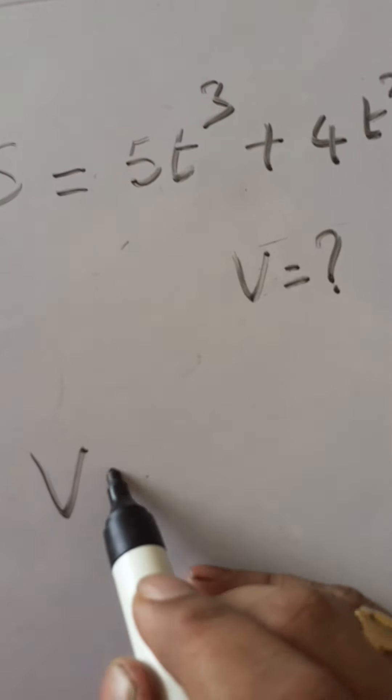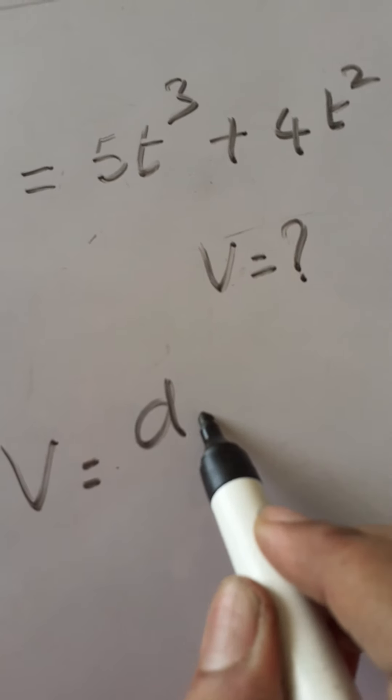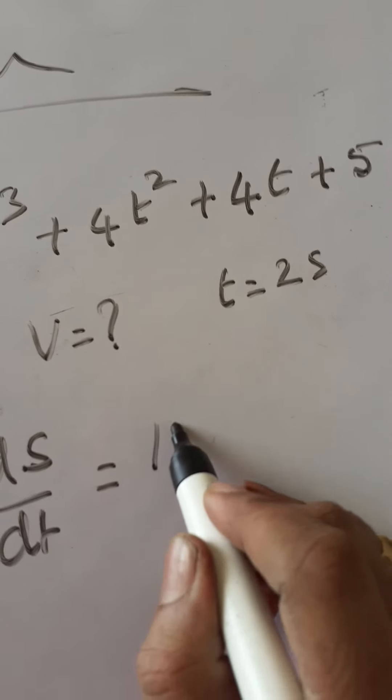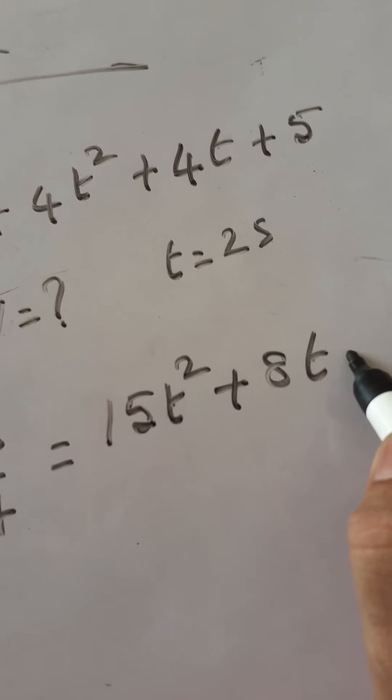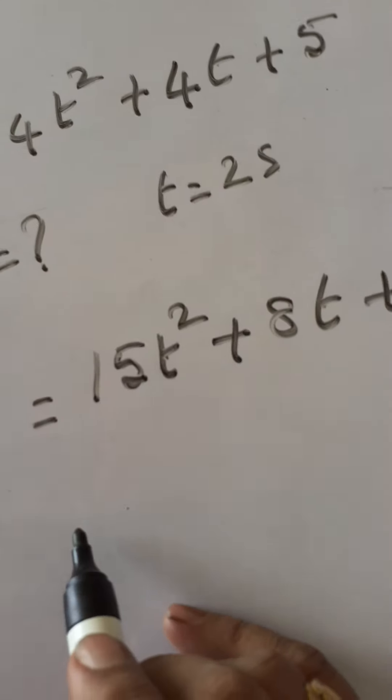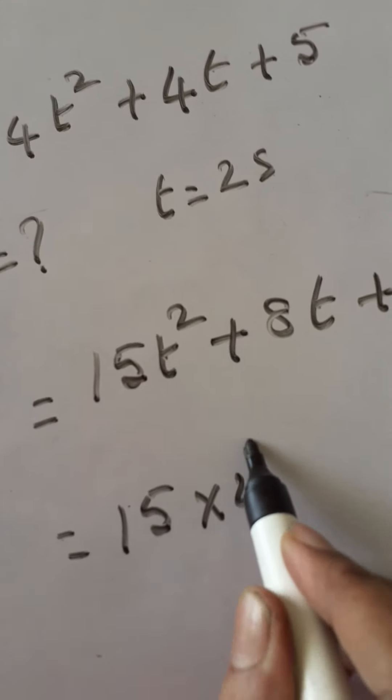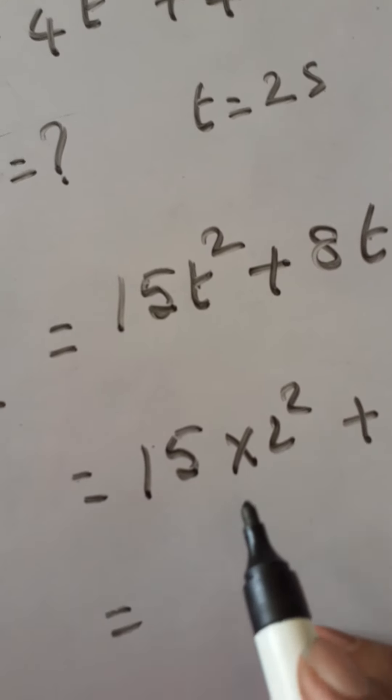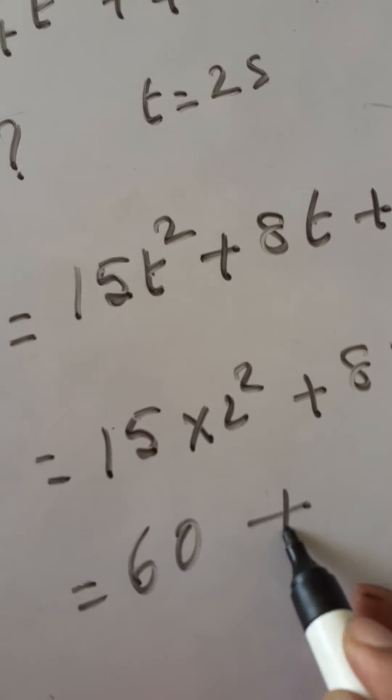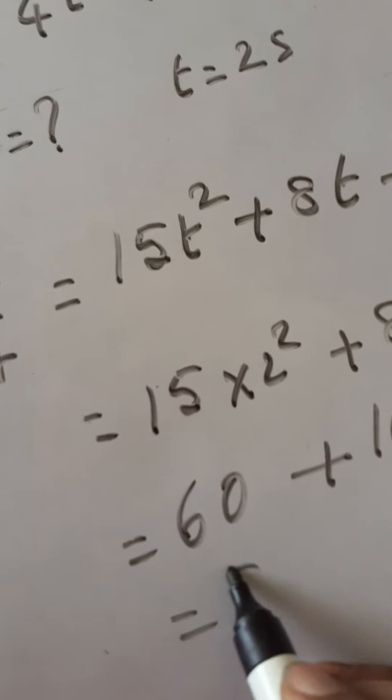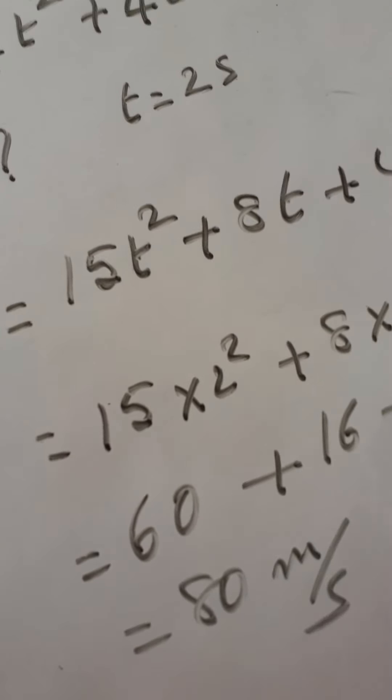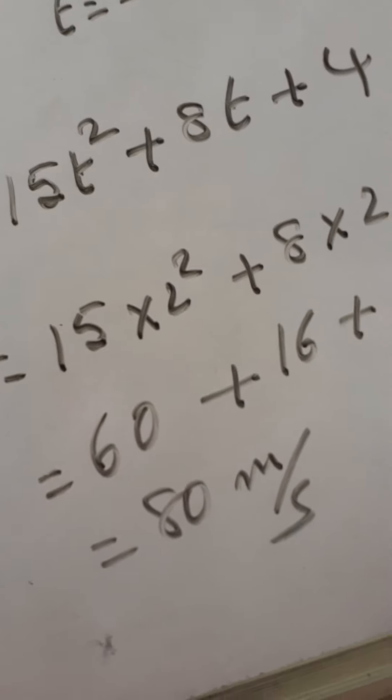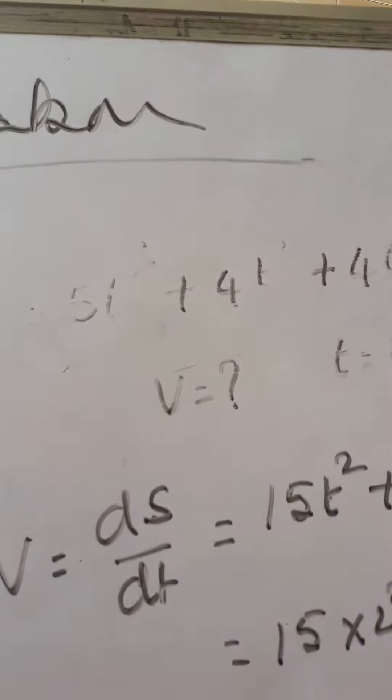So to get velocity you have to differentiate displacement. dS by dt is velocity. So differentiate this equation: 15t square plus 8t plus 4. Put t is equal to 2. So 15 into 2 square plus 8 into 2 plus 4. So 15 into 4, 60 plus 16 plus 4, so 80 meter per second. If the displacement is given in meter then we can write units for velocity, meter per second. Like that we use differentiation in physics.